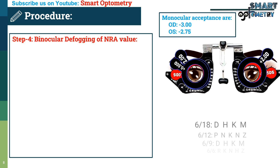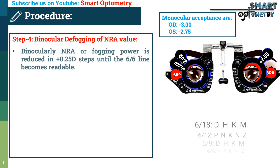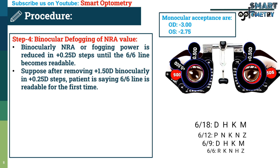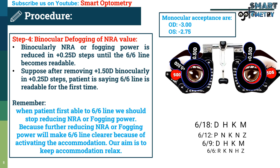Step 4 — binocular defogging of NRA. Binocularly, the NRA or fogging power is reduced in +0.25 diopter steps until the 6/6 line becomes readable. Suppose after removing +1.50 diopters binocularly in +0.25 D steps, the patient reports that the 6/6 line is readable for the first time. We stop reducing NRA power at that point, because further reduction would activate accommodation and our aim is to keep accommodation relaxed.